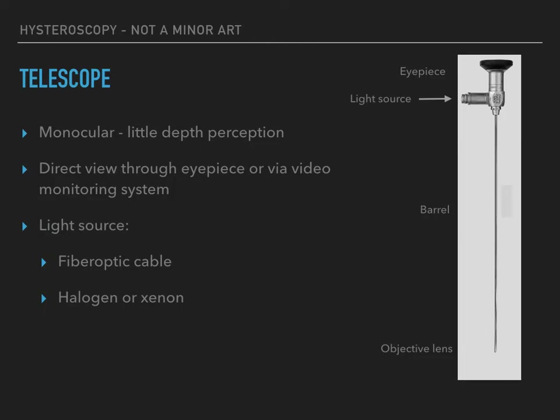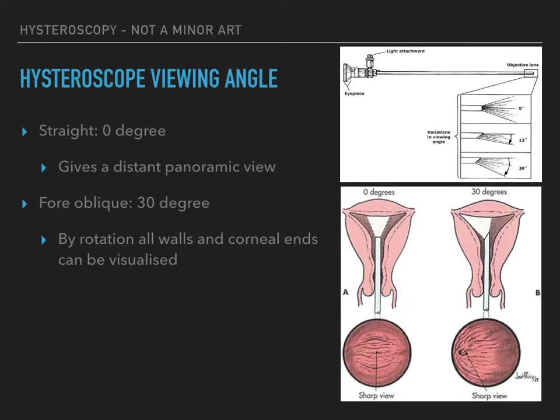Fibre optics allow transmission of bright light without the transmission of significant heat. Most light sources are either halogen or xenon. The telescope has varying viewing angles, ranging from 0 to 70 degrees. As illustrated in the pictures, a 0 degree hysteroscope provides a panoramic view in line with the sheath. Hysteroscopes with larger viewing angles will allow the surgeon to visualize areas to the left or right of midline without shifting the telescope from side to side.